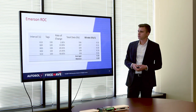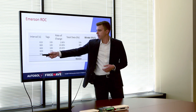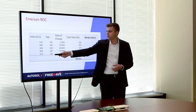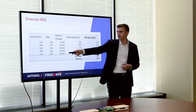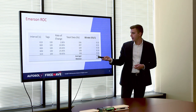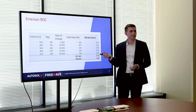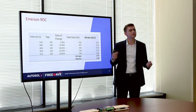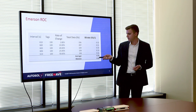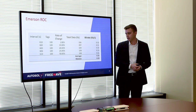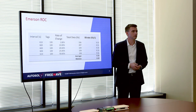Here are the results from the ROC test. We have our time interval, 10 minutes, 100 tags, rate of change 1%, 10, 20, 25, and 50. The bit rate is significantly smaller than Modbus because we have one-tenth of the number of tags. But again the average and median are the same — 0.32 kilobits per second used to bring 100 ROC tags over, no matter what the rate of change.